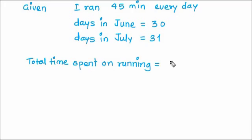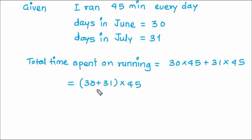Total time spent on running is equal to 30 into 45 plus 31 into 45. But if you remember, because I am running the same amount of time both months, what I can do is instead of doing the multiplication first and then addition, I can do the addition first and then multiplication. But because I want to do addition first, I have to put brackets. So, it will be 30 plus 31 multiplied by 45.